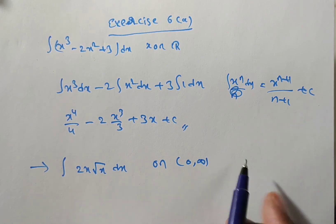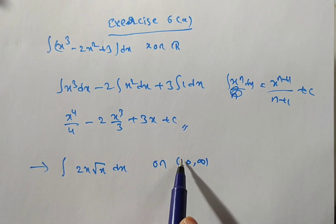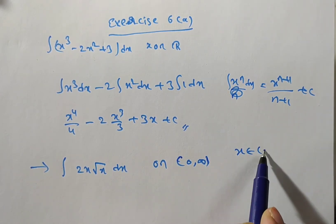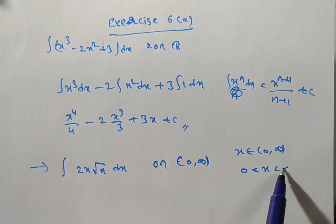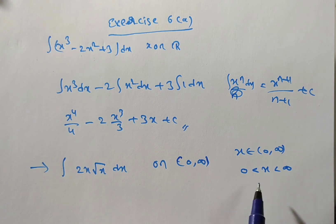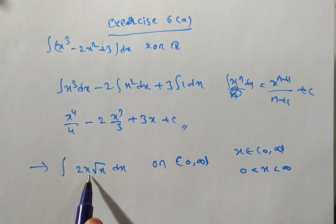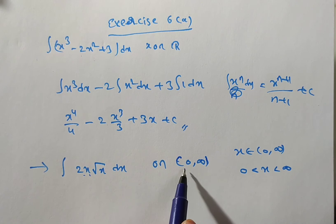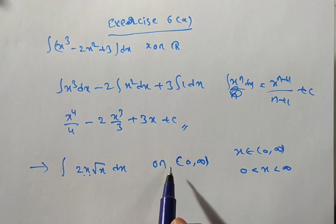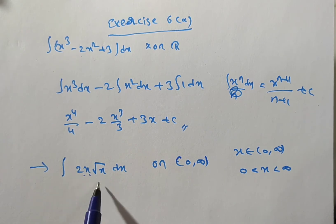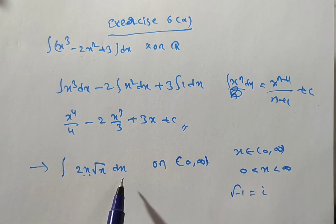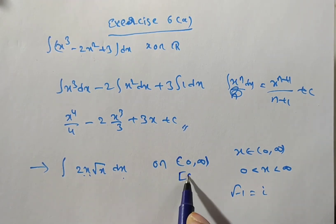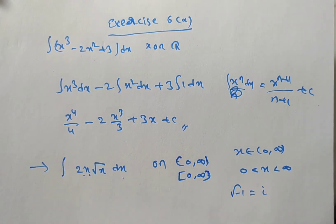For example: x belongs to (0, infinity) means 0 less than x less than infinity, so x is not equal to 0 and not equal to infinity. Also, if x were negative — say x equals minus 1 — then root of minus 1 is imaginary, but we are discussing integrals in the real number system, not the complex number system. So we take only positive values; the interval (0, infinity) is acceptable.